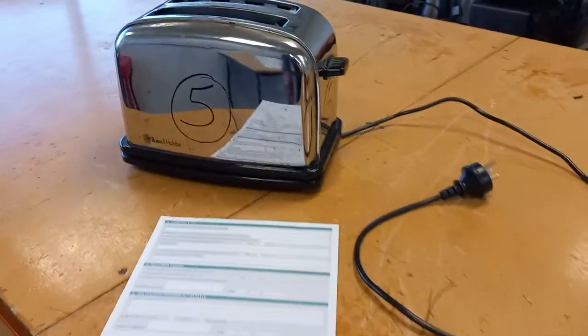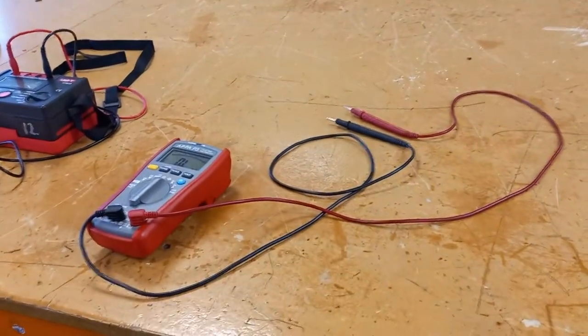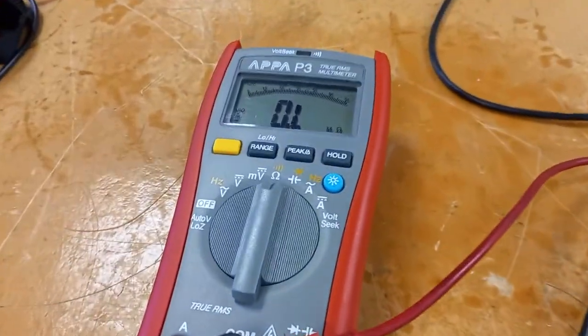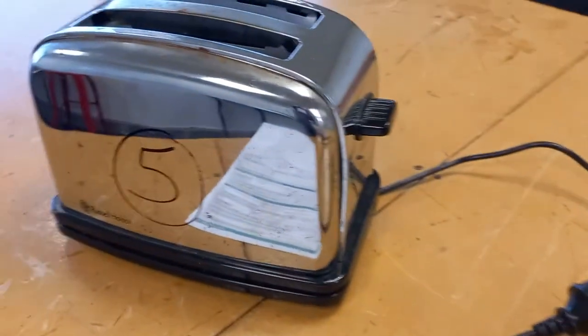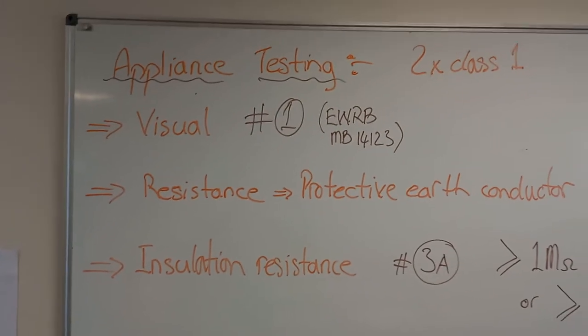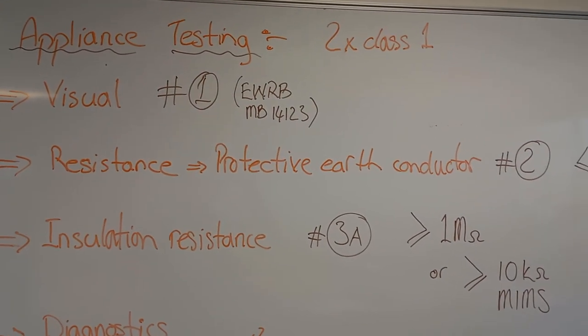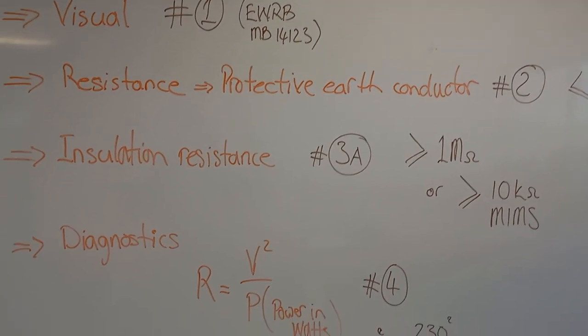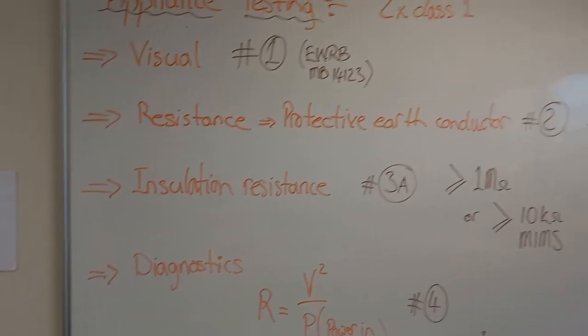There is a quick overview of the basics of testing a Class 1 appliance. You'll need a low ohms reading multimeter, an insulation resistance tester, and your Class 1 appliance. This EWRB test form can be downloaded from the EWRB website. Follow these steps: first the visual, followed by the resistance of the protective earth conductor, then the insulation resistance, and finally the diagnostics. Thank you for watching.